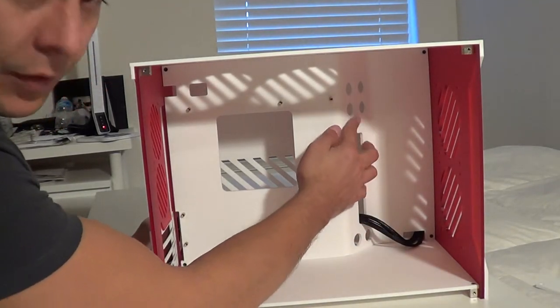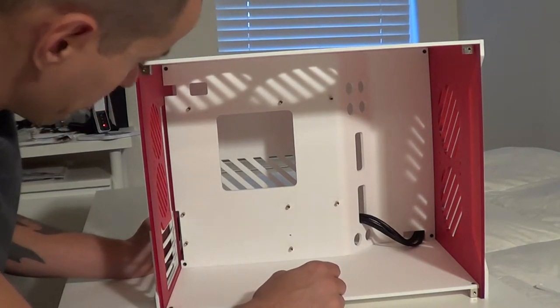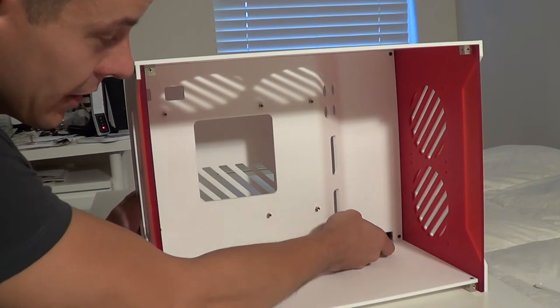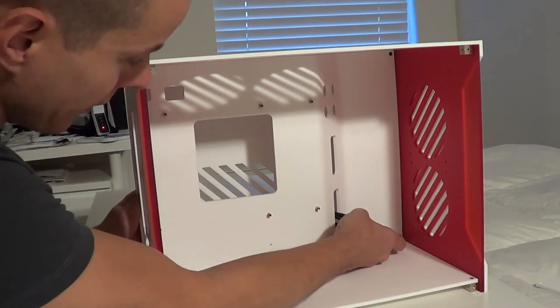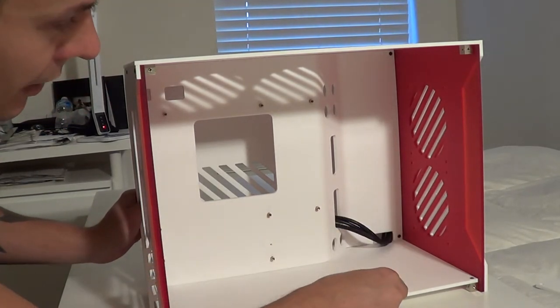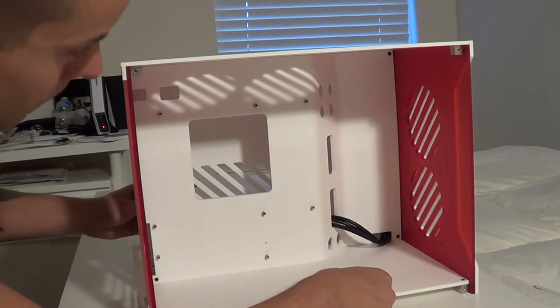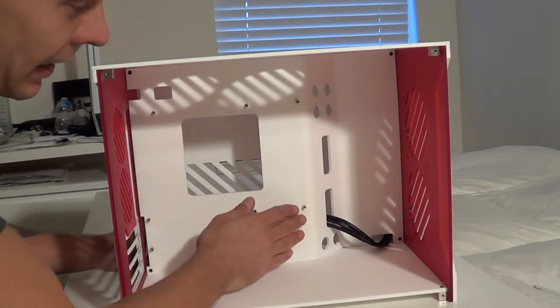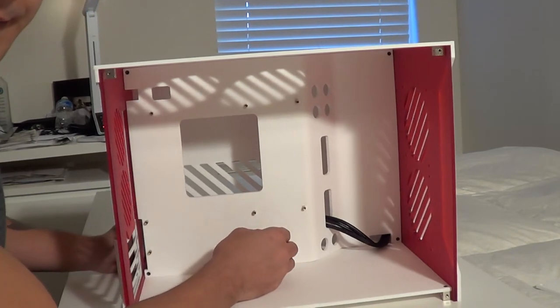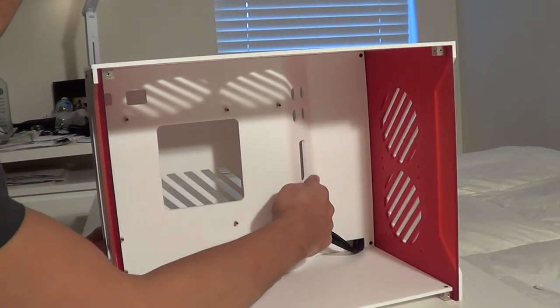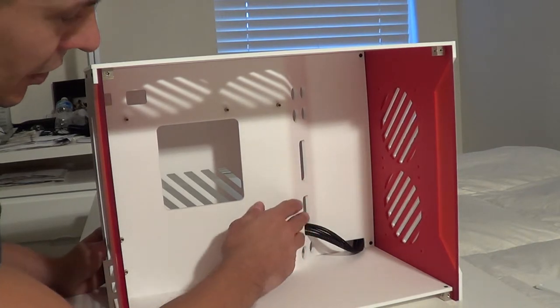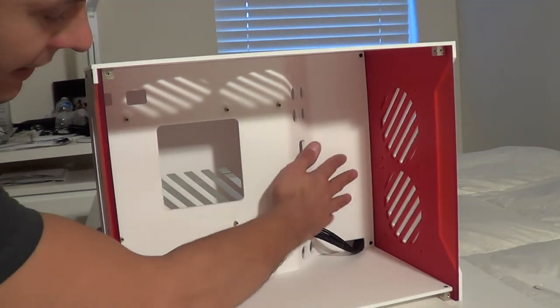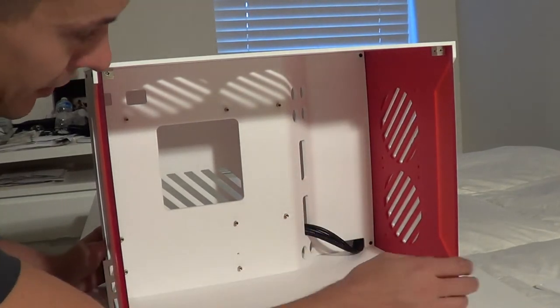Over here, we've got our nice cutouts for our cable management. And these are actually the wires for the vandal switch and the USB 3.0 headers. Now as you can see, I don't know if you can tell because it's white and it may blend in, but right here, the case actually dips back. So you have much more space between the side window back here than you do here. So there's plenty of room in here for stuff.